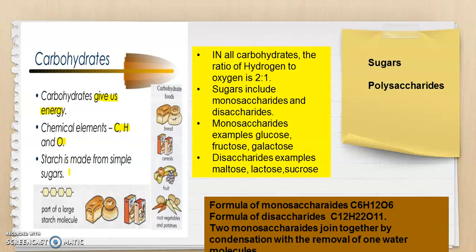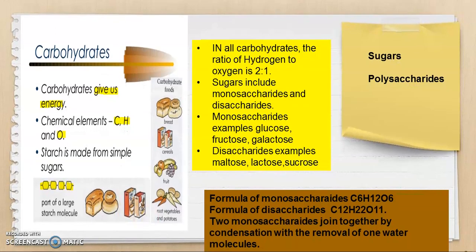One popular example of carbohydrates is starch. Starch is made from simple sugars — these sugar units are glucose. In this diagram you can see glucose units combined together to make a starch molecule, and the number may vary into the thousands. Sources of carbohydrates include bread, cereals, pulses, fruits, root vegetables, and potatoes — they all contain starch.